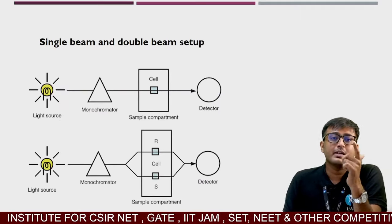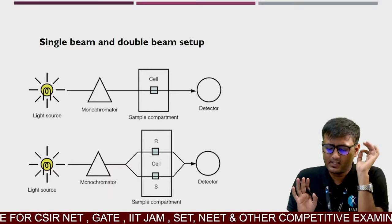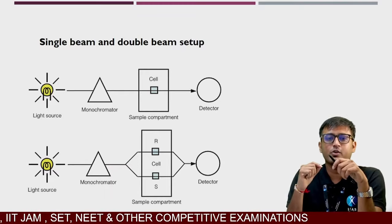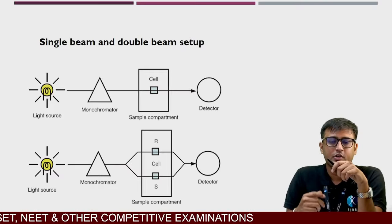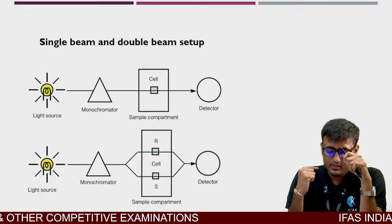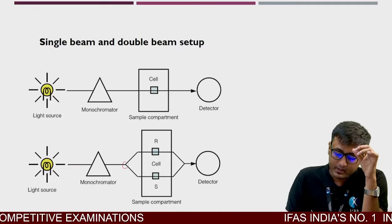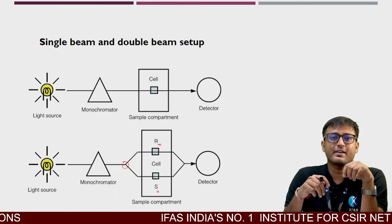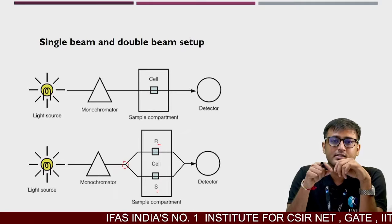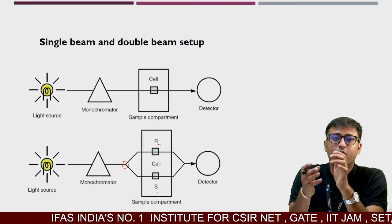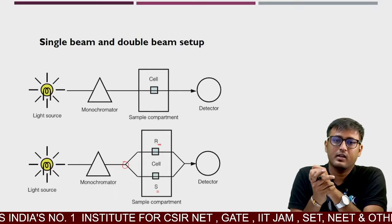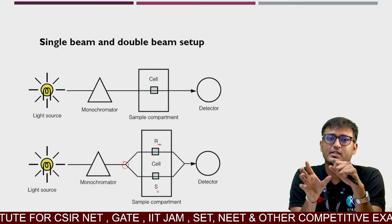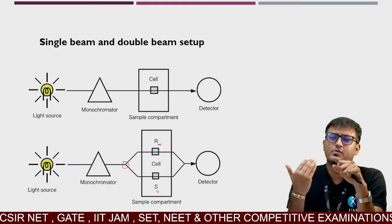Single beam aur double beam mein ek aur difference hai. Single beam ek conventional model tha jahan pehle blank rakhna hota tha, flip blank, blank ko remove karke humara test sample cuvette mein rakhna hota tha — yahan pe sirf ek hi cell ka provision tha. Whereas double beam mein ek beam splitter hota hai jo simultaneously ek reference (blank) aur ek sample ko dono ke through simultaneously pass karega, aur finally jo dono ka difference hai usko measure karega.